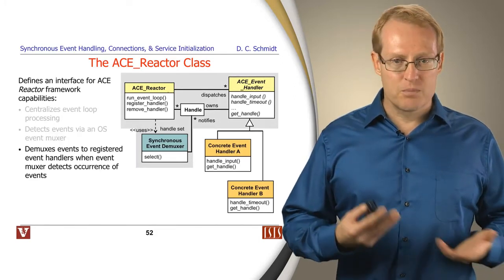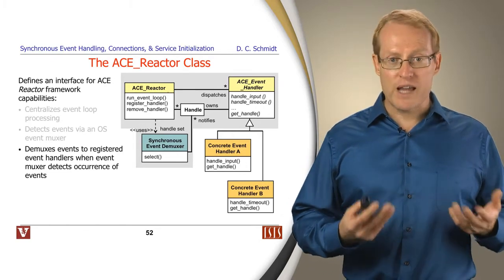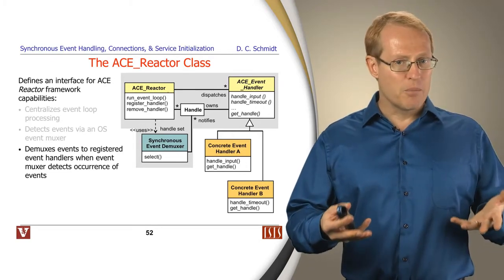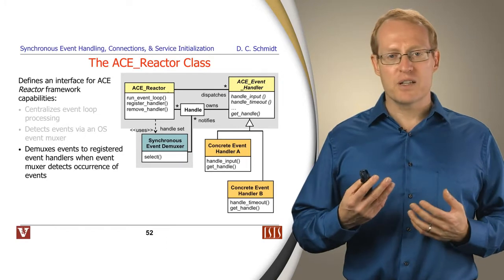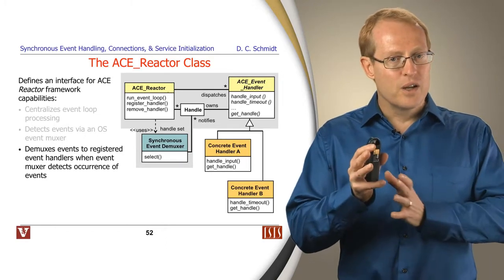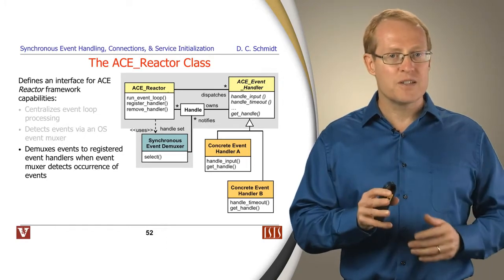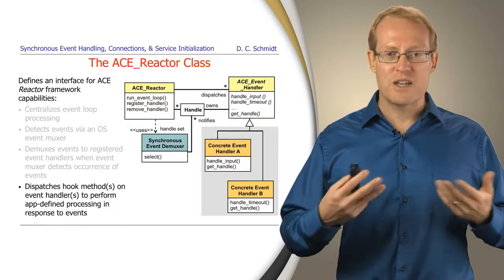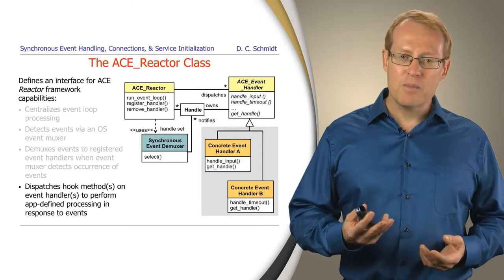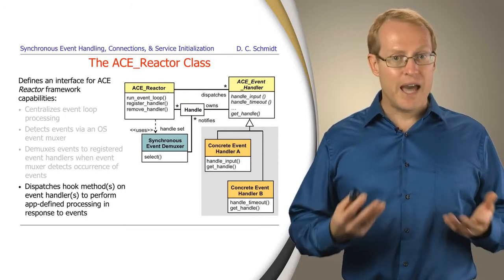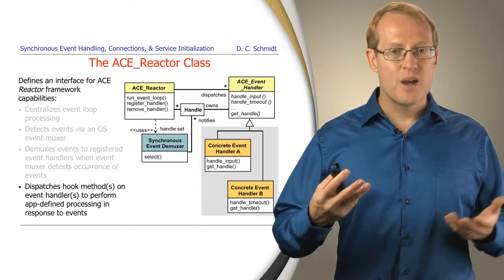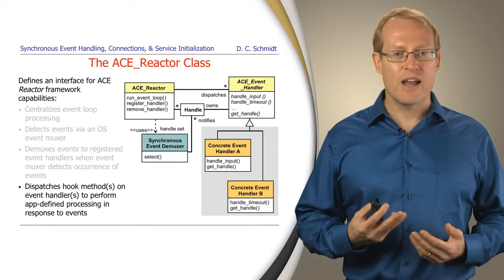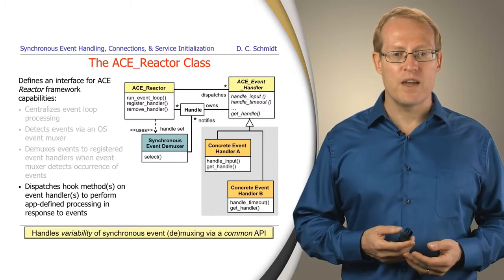The event handler callback process is done by the reactor when the underlying multiplexer returns, and it basically takes a look and sees what happens, correlates that to the handlers registered for those types of events, and then it goes ahead and dispatches their hook methods, the appropriate ones based on what events occurred. And these hook methods, of course, are then the things that do application or service specific processing logic in order to carry out the work designated and associated with those types of events.